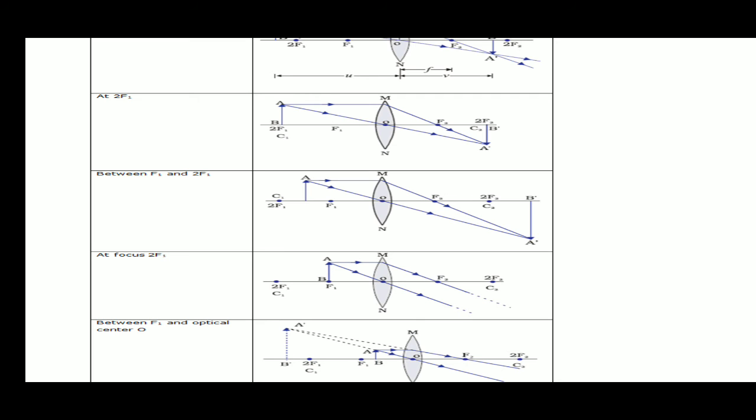Next case: when the object is between f1 and 2f1. We take two rays — one parallel to the principal axis will pass through focus, and the second through the optical center goes straight. They will intersect beyond 2f2 and form an enlarged image.